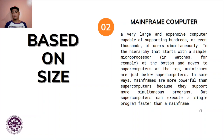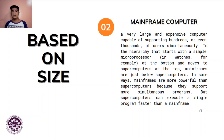The second type based on size is the mainframe computer. This is a very large and expensive computer capable of supporting hundreds or even thousands of users simultaneously. In the hierarchy that starts with a simple microprocessor at the bottom and moves to supercomputers at the top, mainframes are just below supercomputers — like Batman to Superman.